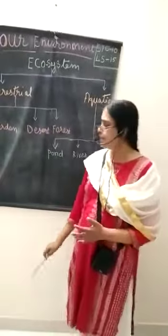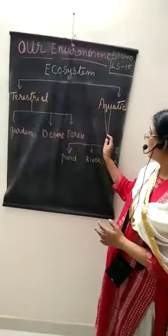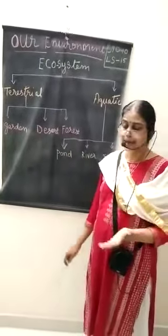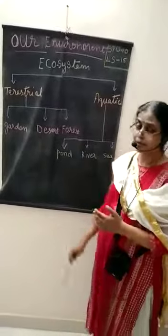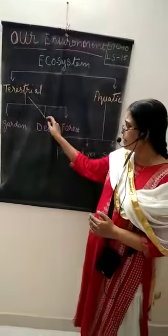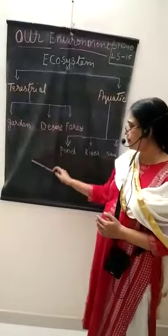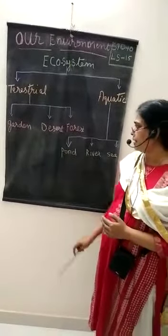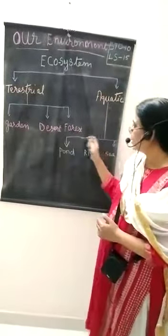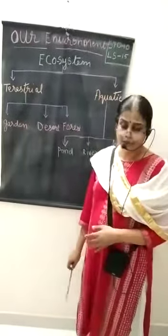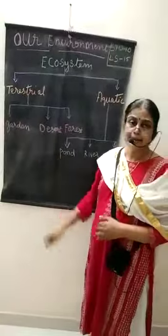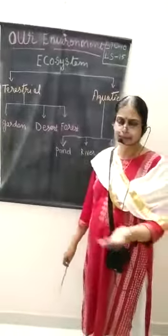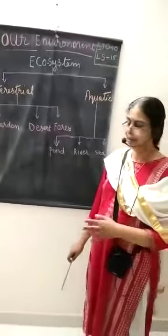Ecosystem is classified into two types: terrestrial and aquatic. Terrestrial means on land, and aquatic means water. Terrestrial ecosystems include garden, desert, and forest. Within both terrestrial and aquatic, there are natural and artificial types. A garden is an artificial ecosystem, while desert, forest, and grassland are natural ecosystems.